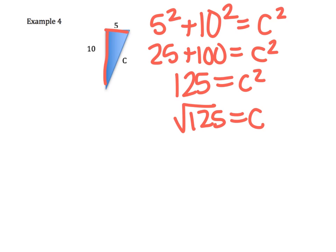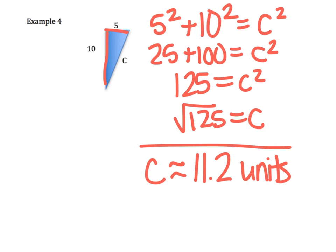That's not a nice one. We get the square root of 125 is about, so C is about 11.2 units. So it's not always going to be a perfect square for the length, but on this one we end up with 11.2 units for the length of our hypotenuse.